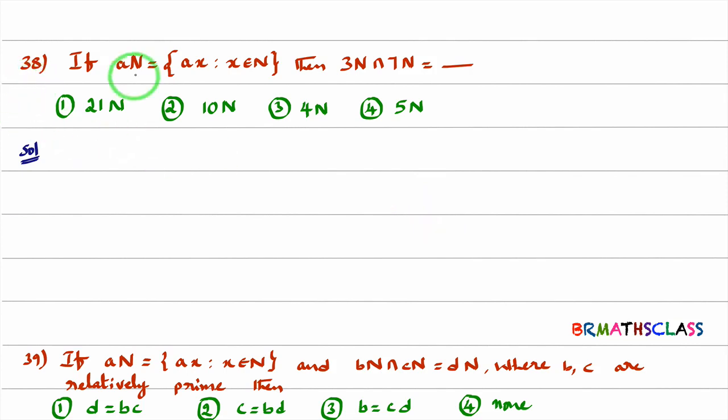You see question number 38. If the set AN is defined as which contains all the elements like ax, where x is a natural number, then 3N intersection 7N is what they are asked. First, I will write clearly what is 3N, what is 7N in roster form.